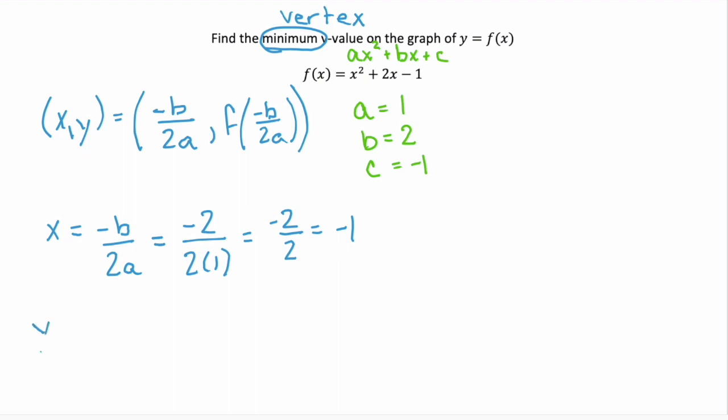And to find our y value, we're going to find f of negative 1. So we substitute negative 1 back into our given function wherever we have an x. And that is negative 1 squared plus 2 times negative 1 minus 1.